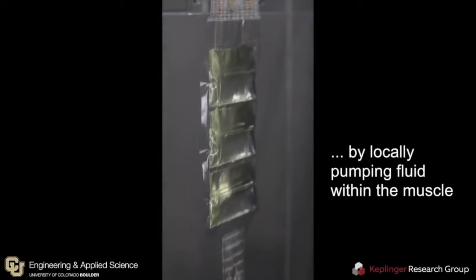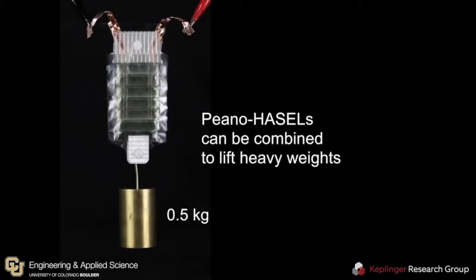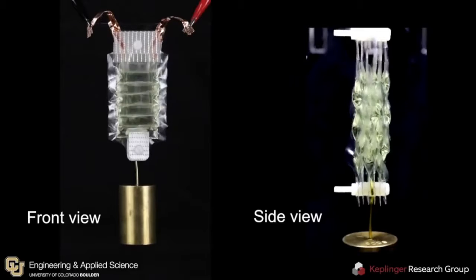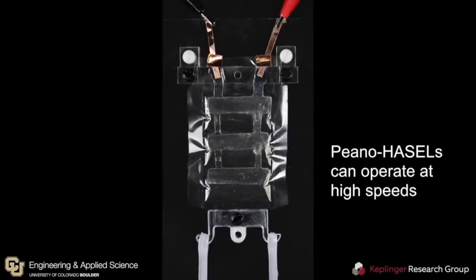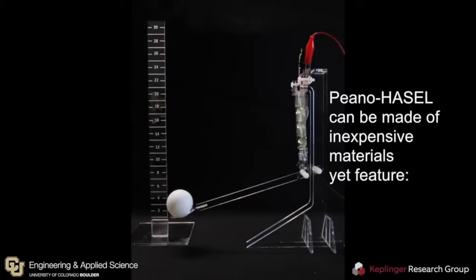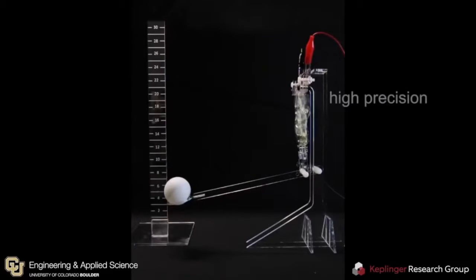The researchers at Boulder developed a hydraulically amplified self-healing electrostatic actuator, or HASEL actuator for short. The actuators are made out of elastic pouches connected to electrodes and filled with vegetable oil. The oil is an electrically insulating liquid, and when electricity is applied, the oil is displaced, making the artificial muscle contract.